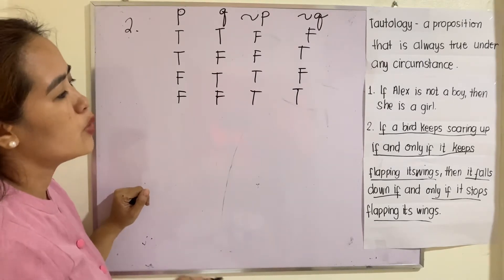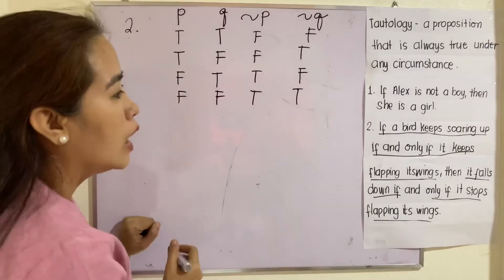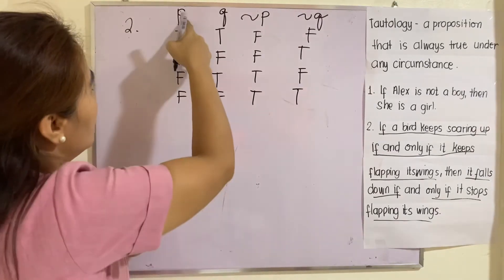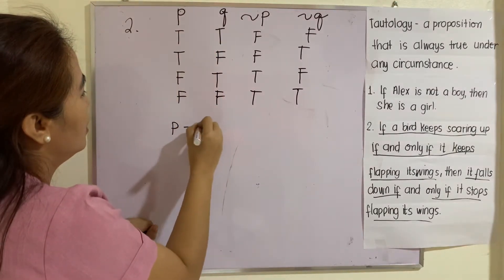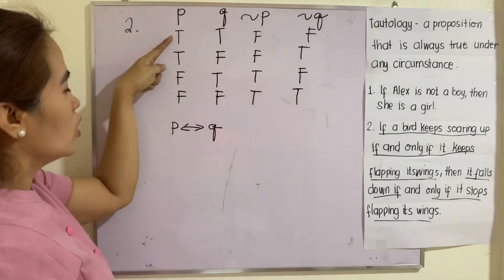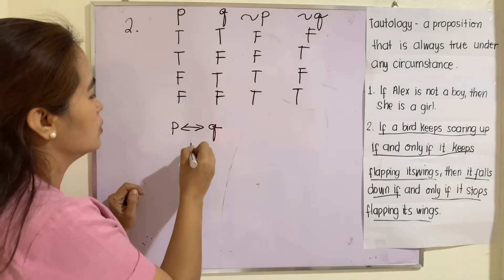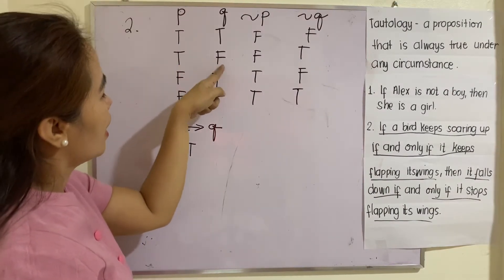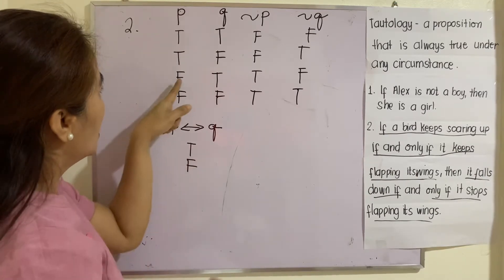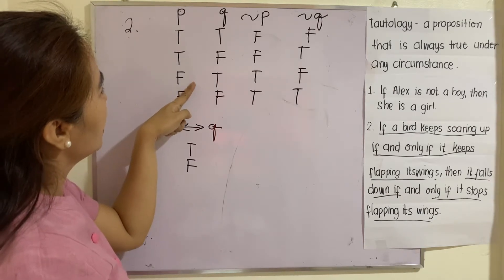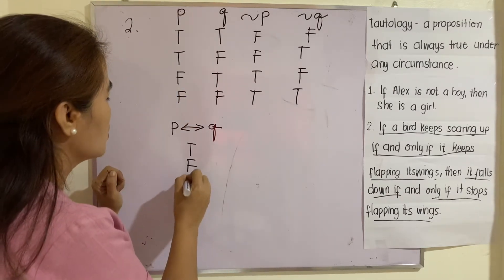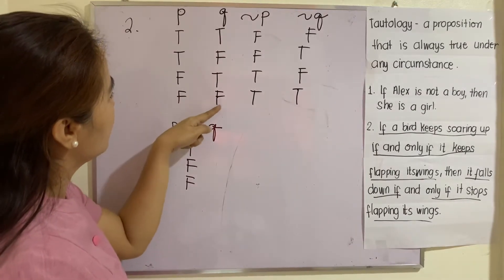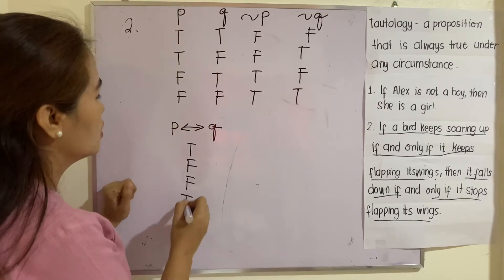If a bird keeps soaring up — that is P — if and only if it keeps flapping its wings, so P if and only if Q. Referring to the truth table: T if and only if T is true; T if and only if F is false; F if and only if T is false; F if and only if F is true.